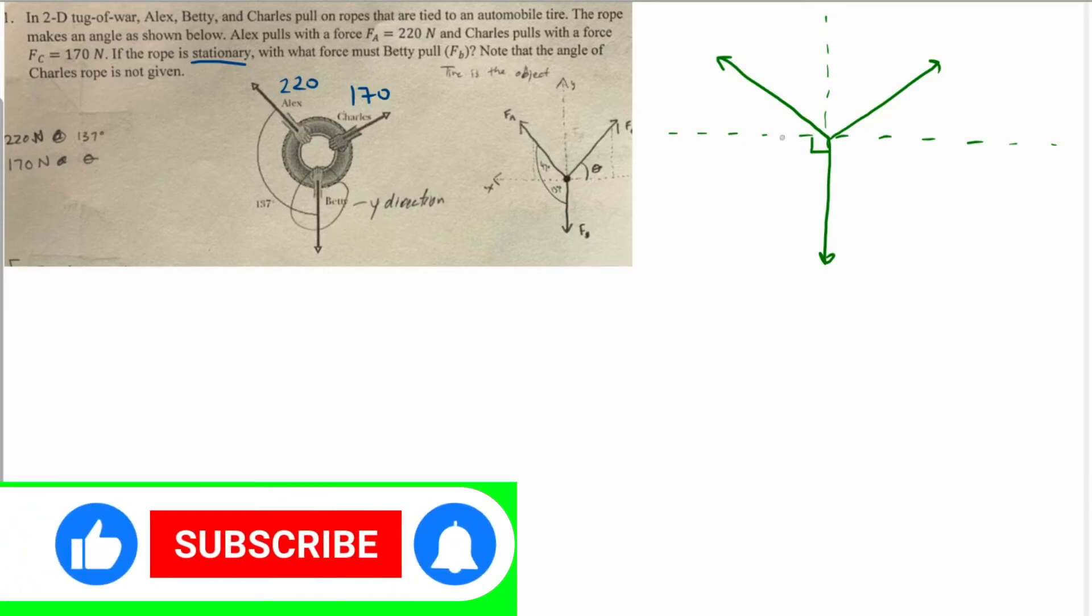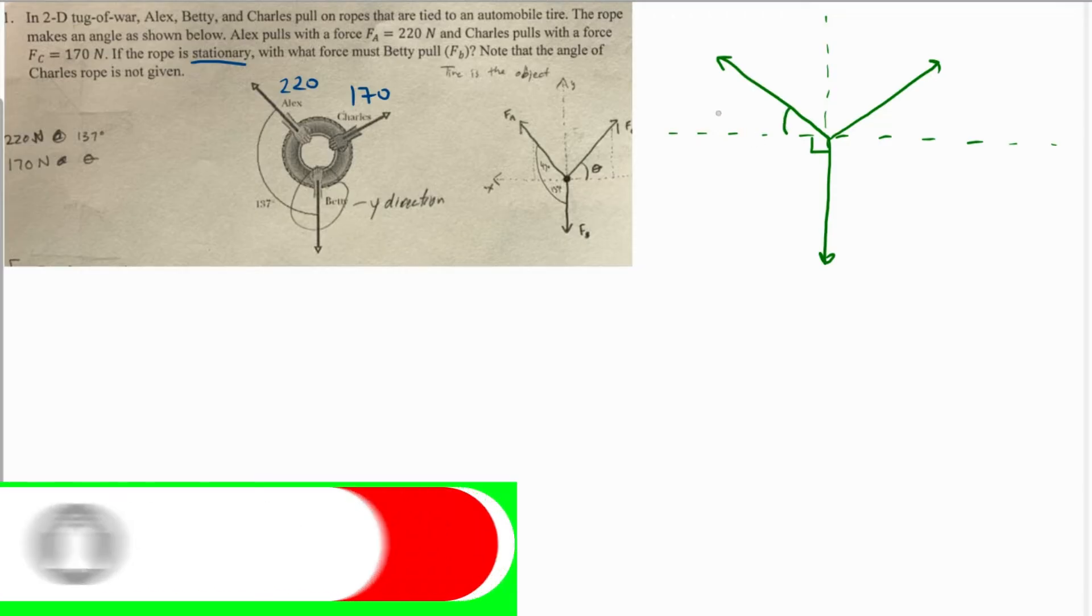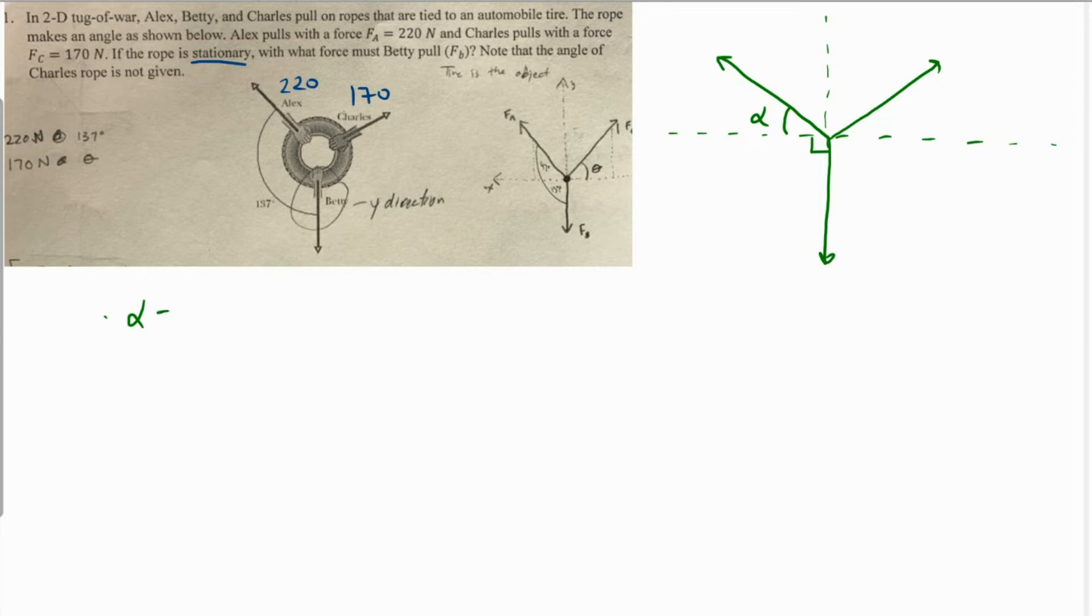Definitely this is 90 degrees, and since this complete angle was 137, so what will be this angle? This will be 137 minus 90, right? Alpha is going to be 137 minus 90, which is going to be 47 degrees.